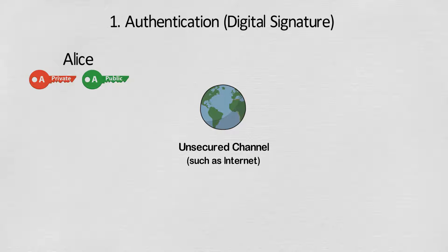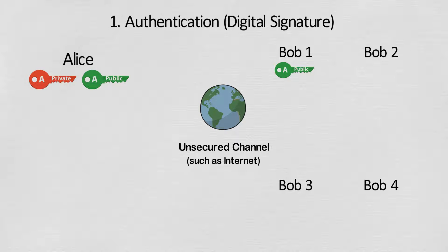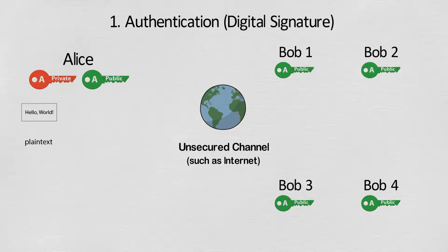This is a one-time process and new key pairs are only generated if the private key is lost or leaked. She will keep her private key secret and share the public key with all the employees — say Bob 1, 2, 3 and so on.